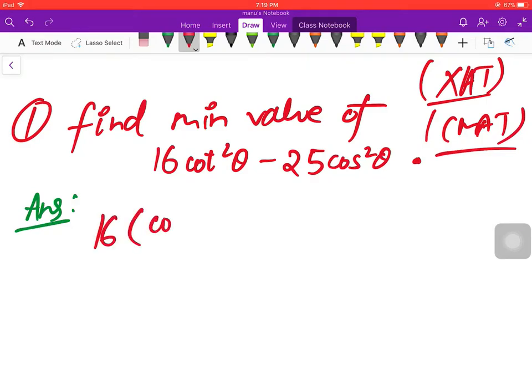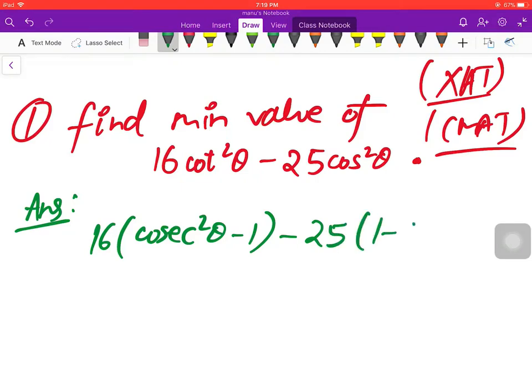Cot²θ, sorry. 16 cosec²θ - 1, 1 - sin²θ. Okay? Now, we can solve this. 16 cos²θ...